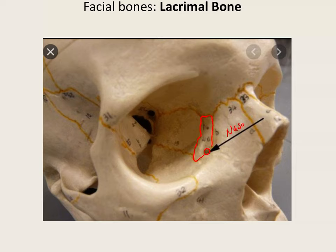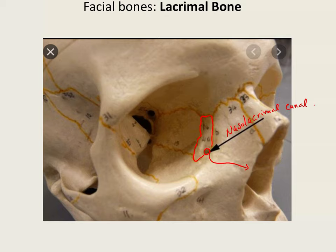The nasolacrimal canal allows tears to drain into the nasal cavity via the lacrimal sac. So if you produce more tears, like when you're crying, your nose tends to run because your tears drain in here. The orbital surface of the lacrimal bone is up here — it forms the orbit. You can skip the lacrimal groove.